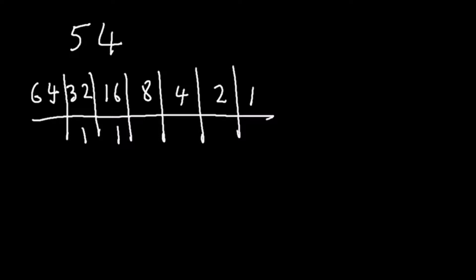Now to work out the minimum number of bits we need to represent 54, we simply count from the leftmost 1, so the 1 that corresponds to 32, and we just count up the bits: 1, 2, 3, 4, 5.